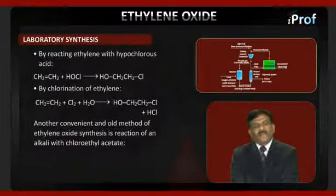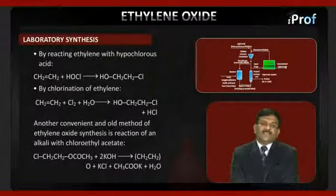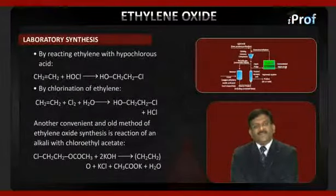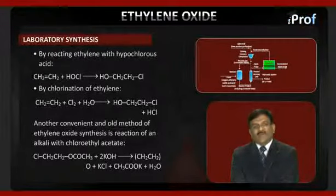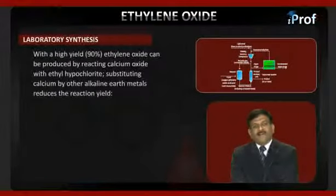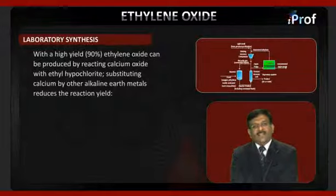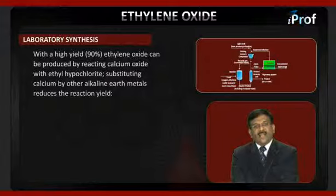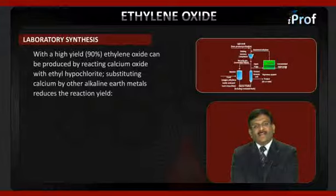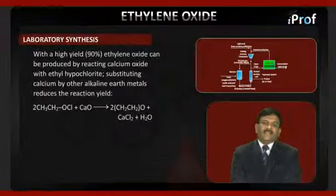Another convenient and old method of ethylene oxide synthesis is the reaction of an alkali with chloroethyl acetate: ClCH2·CH2·OOCCH3 + 2KOH → CH2CH2O + CH3COOK + H2O. With a high yield of about 90%, ethylene oxide can also be produced by reacting calcium oxide with ethyl hypochlorite. Substituting calcium with other alkaline earth metals reduces the reaction yield.